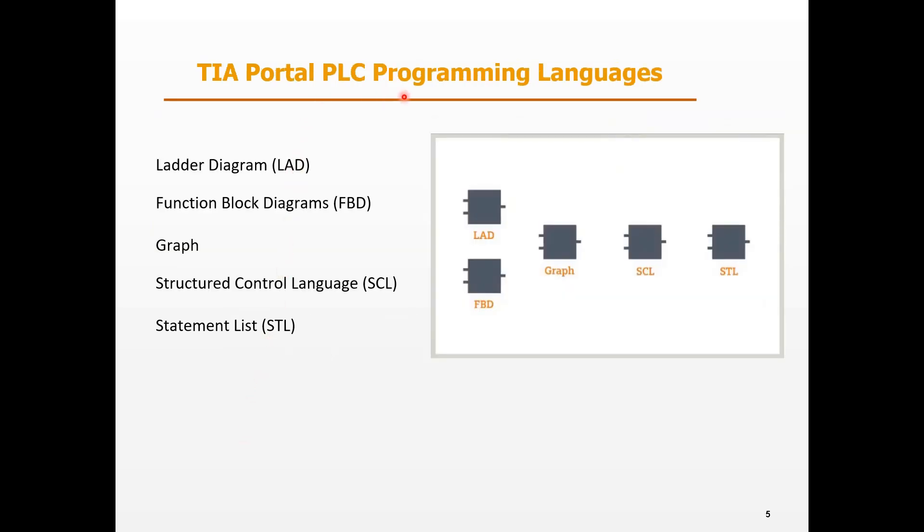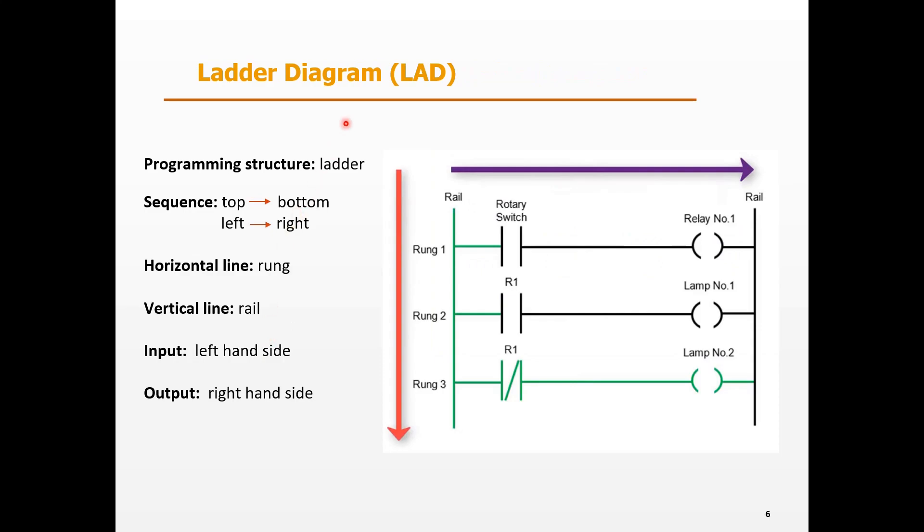There are five programming languages of TIA Portal. Let's take a look at each of them. The most common one is LAD. The programming structure is like a ladder. The sequence is from top to bottom and left to right.